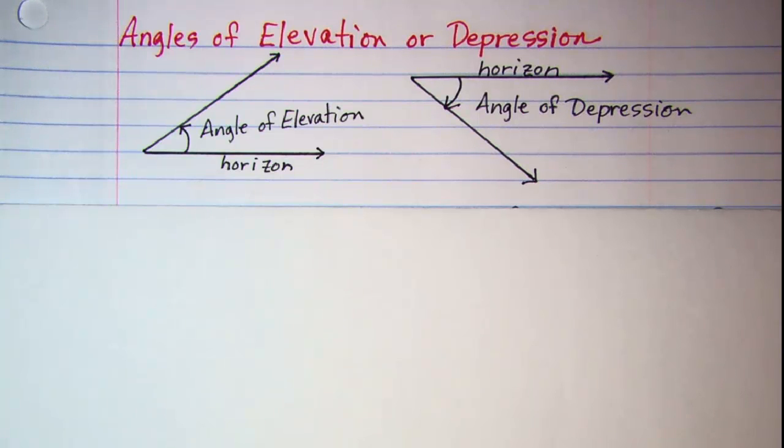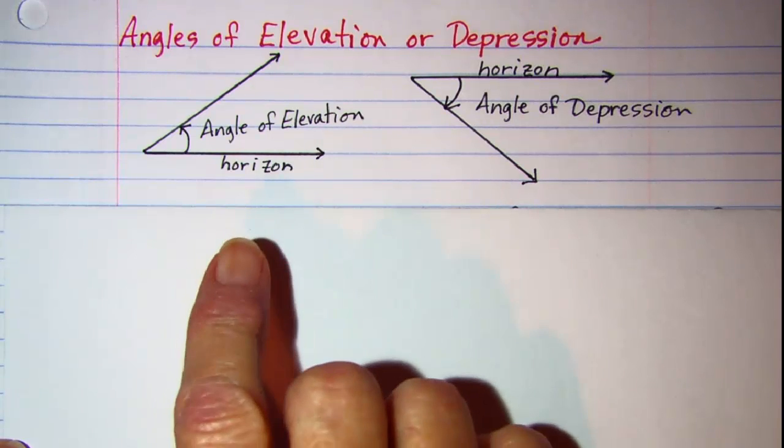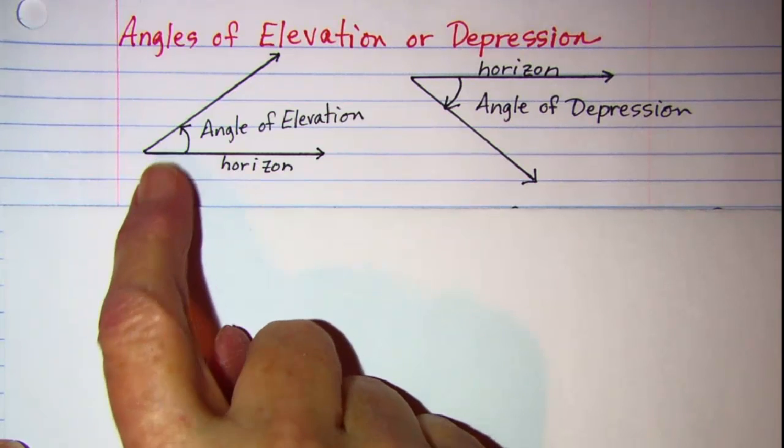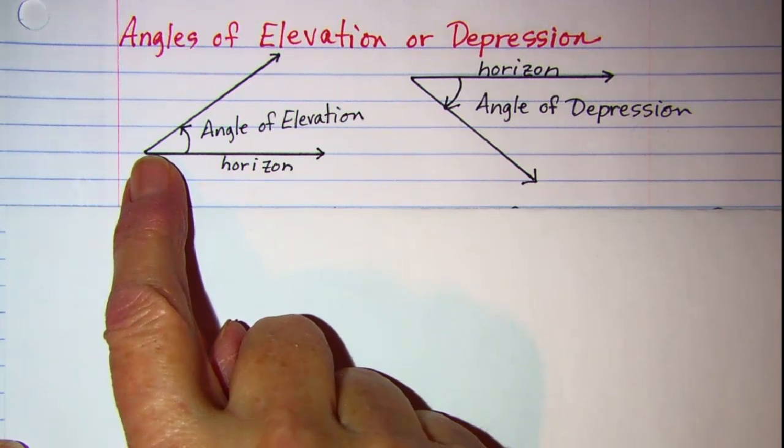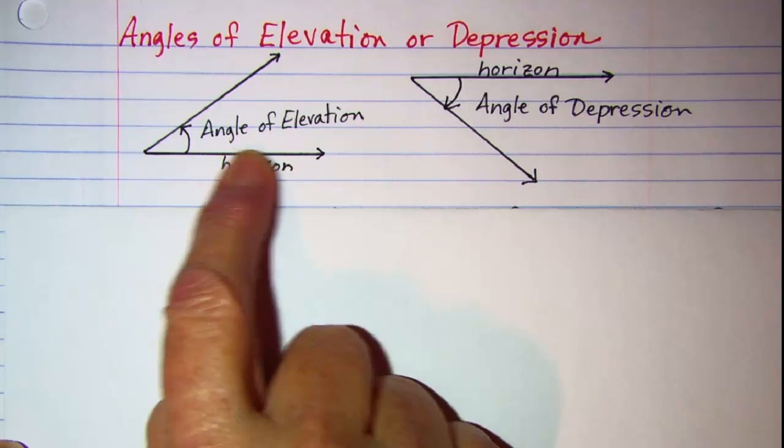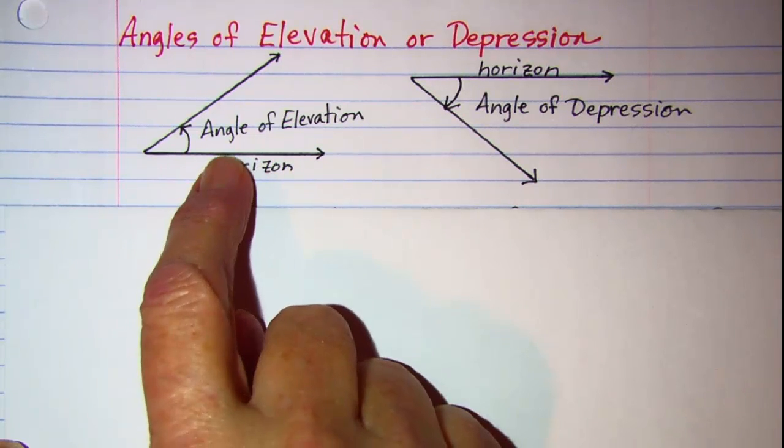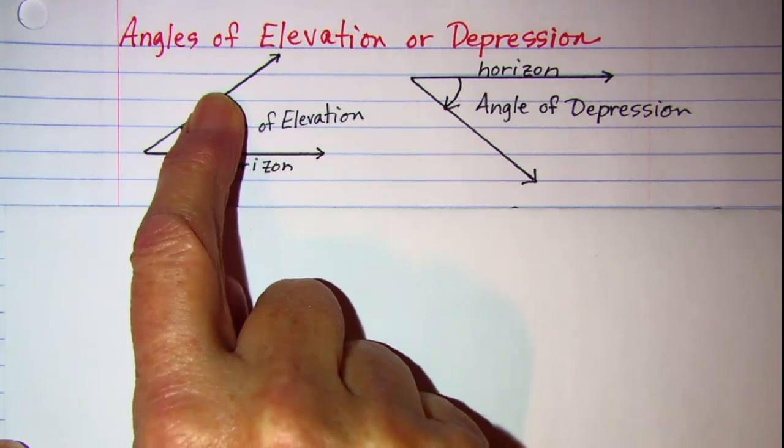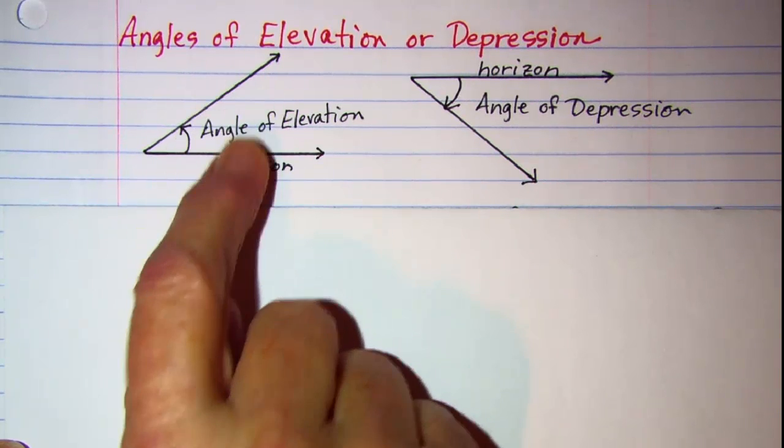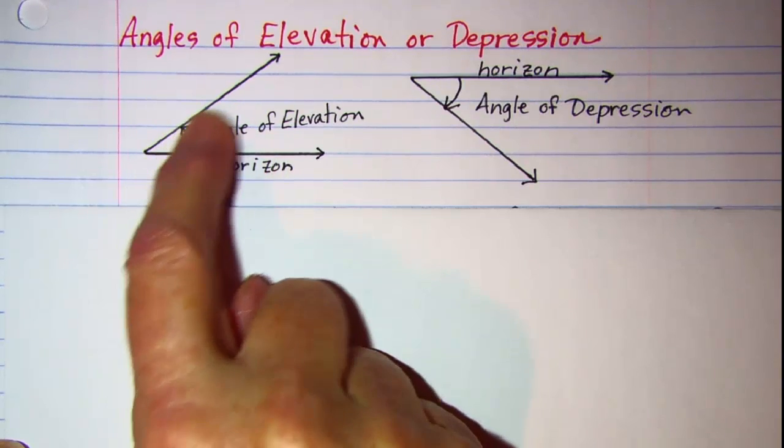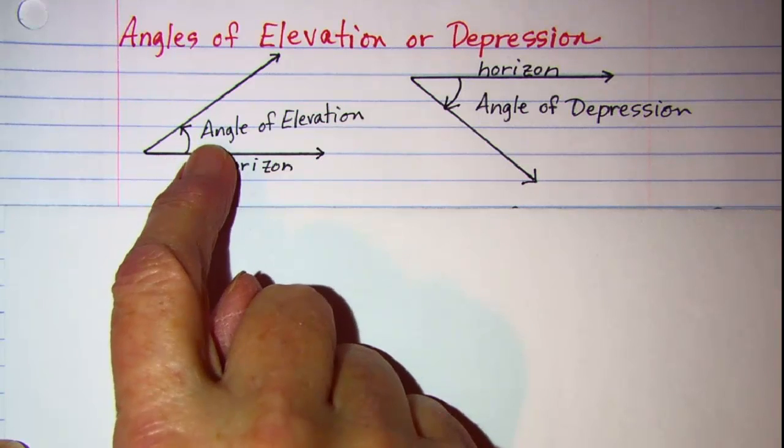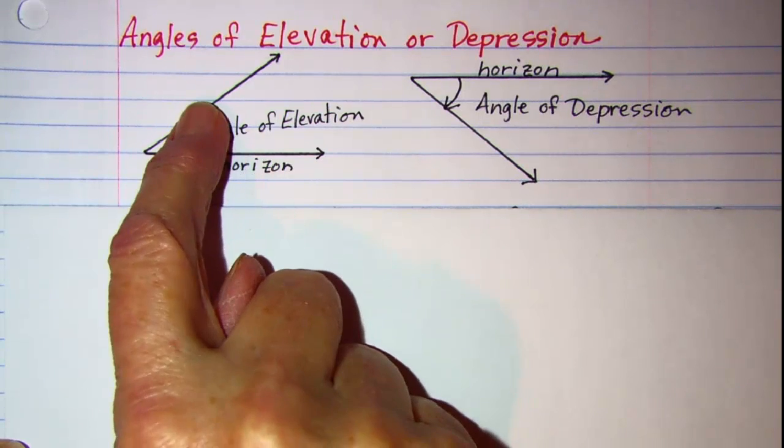In this video we'll be doing a problem that involves angles of elevation or depression. When we talk about the angle of elevation, we're talking about the angle that's formed with the horizon and then our terminal side is moving counterclockwise and going up. So the angle of elevation is this angle right here formed by the horizon and this terminal side.